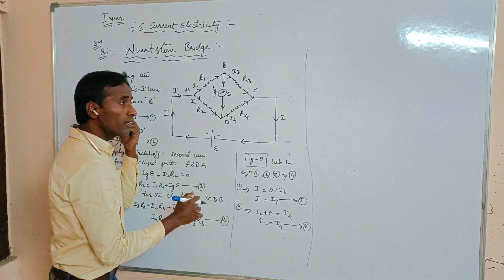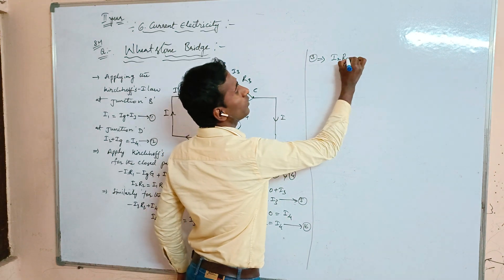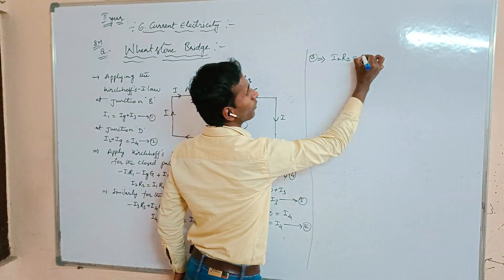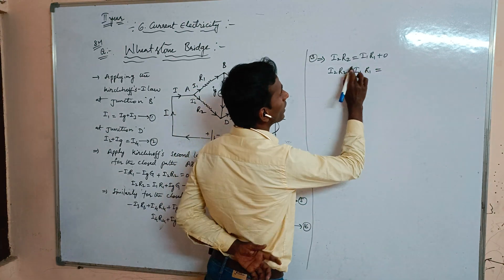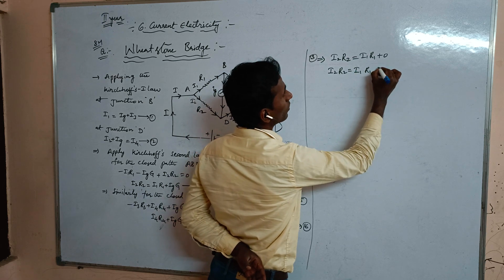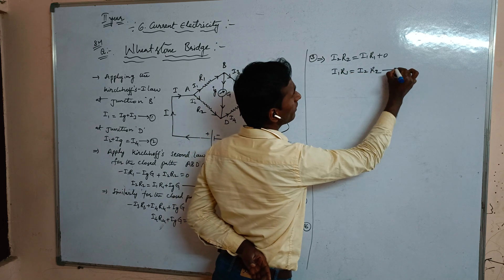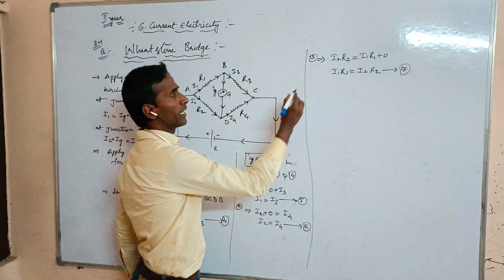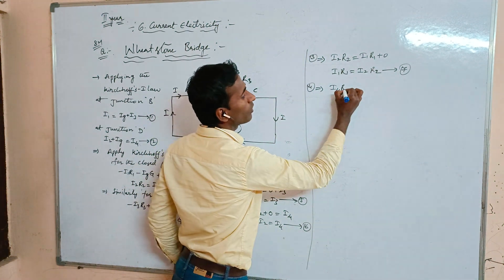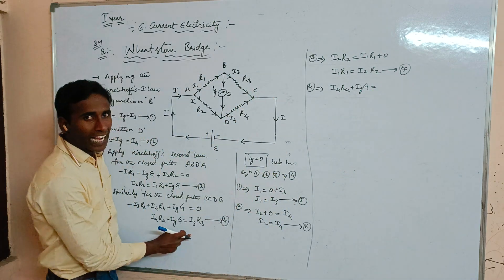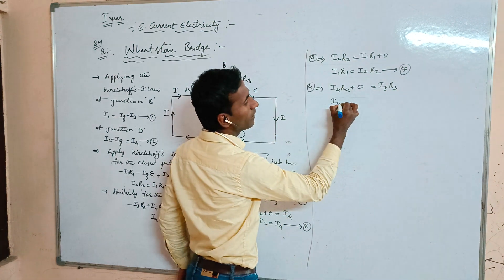Now substituting IG = 0 into equation 3: I2·R2 = I1·R1 + 0, so I1·R1 = I2·R2 — equation 7. Substituting IG = 0 into equation 4: I4·R4 + 0 = I3·R3, so I4·R4 = I3·R3 — equation 8.